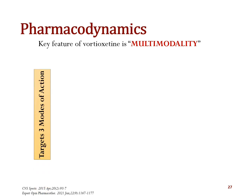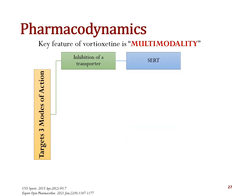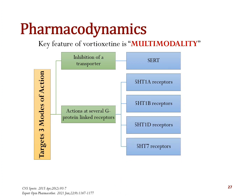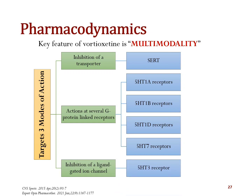It has a multimodal mode of action and targets three sets of receptors. First, it inhibits the serotonin transporter known as SERT. Second, it acts on several G-protein linked receptors known as 5-HT1A, 1B, 1D, and 5-HT7. And lastly, it causes inhibition of the ligand-gated ion channel 5-HT3.